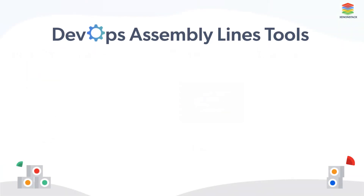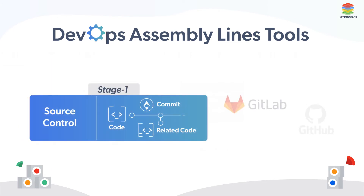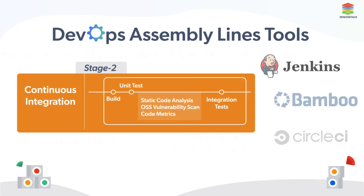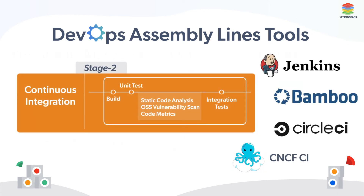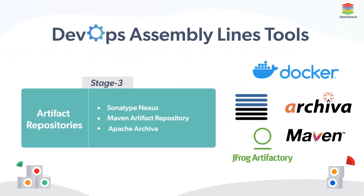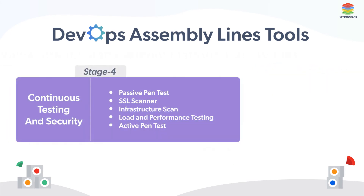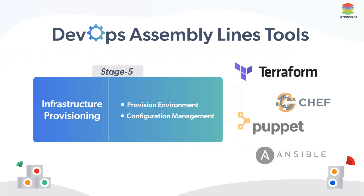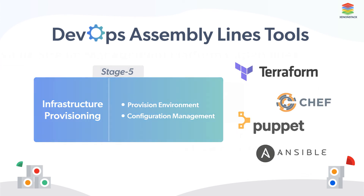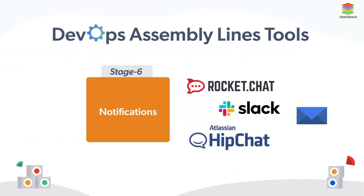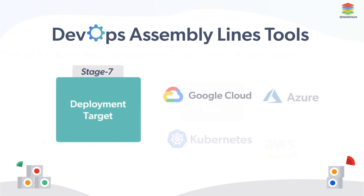Let's understand the various stages of the DevOps assembly line. Stage 1: Source Control. Stage 2: Continuous Integration. Stage 3: Artifact Repositories. Stage 4: Continuous Test and Security. Stage 5: Infrastructure Provisioning. Stage 6: Notifications. Stage 7: Deployment Target.